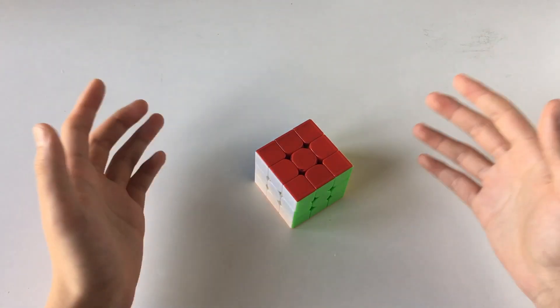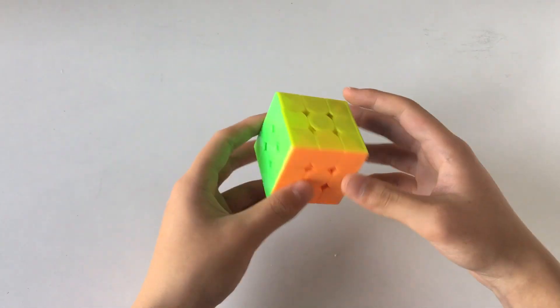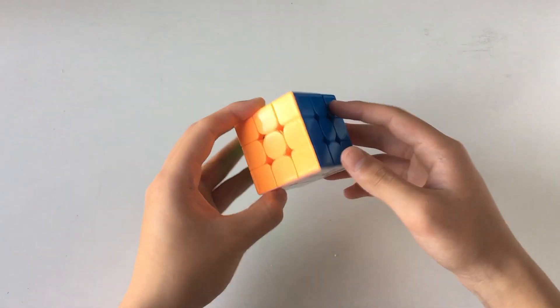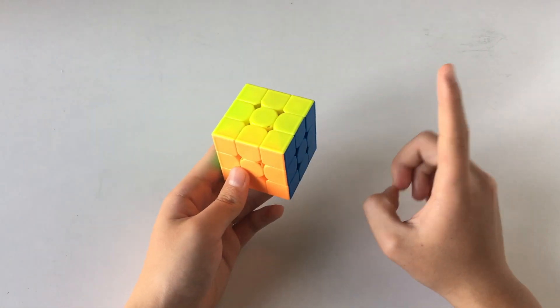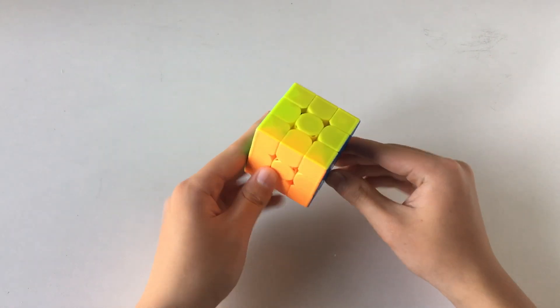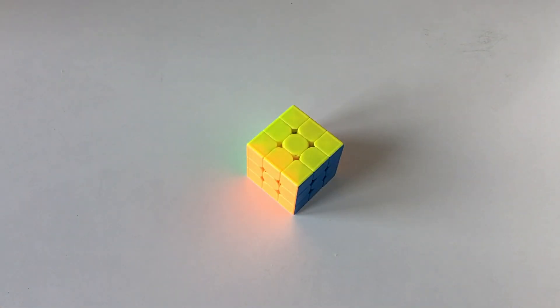And there you go. There is how we got the number of different scrambles that our Rubik's cube can have. Including one of these is the solved state. Alright guys, thank you for watching, and I'll see you guys in the next video. Bye!